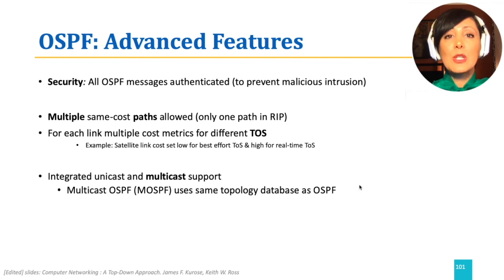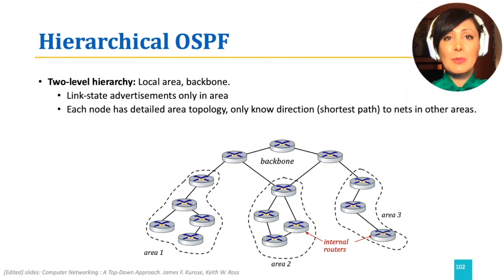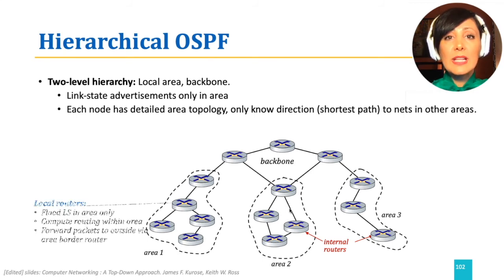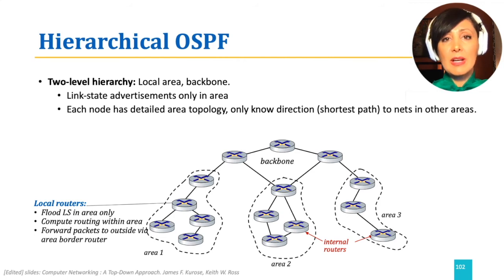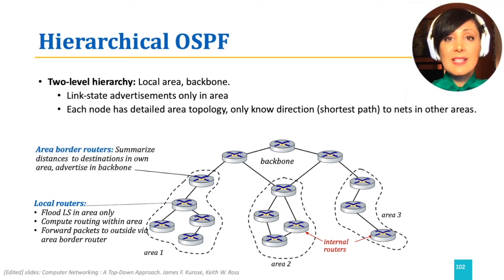OSPF can also be used for hierarchical implementation in larger domains. This figure shows an example of hierarchical OSPF with a two-level hierarchy: backbone area and local area. The goal of the backbone is to route traffic between the different areas within the AS. Link-state advertisement is only within each area, so area-local routers flood link-state advertisements in their area only and compute routing within their area. They forward packets to outside areas using an area-border router, which summarizes distances to destinations in its own area and advertises them to the backbone.